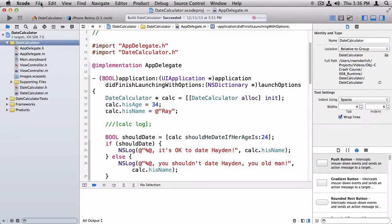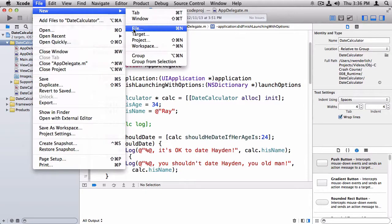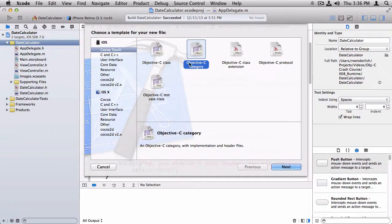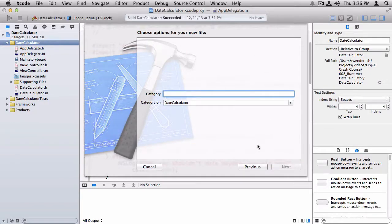So what I'm going to do is I'm going to go to File, New, File, and there's actually a template all set up for us to use called the iOS Cocoa Objective-C Category template. So I'm going to select that.